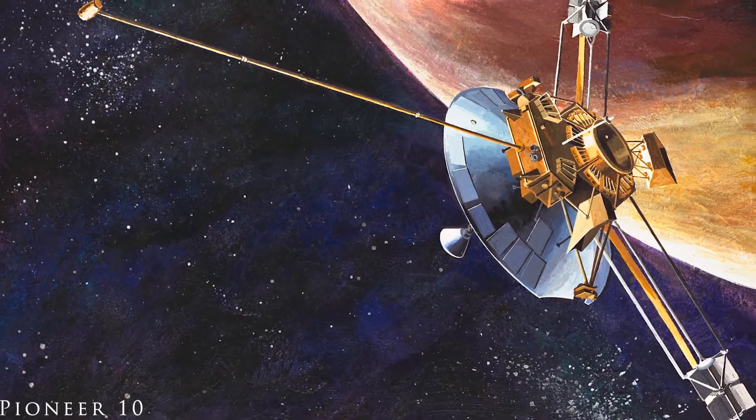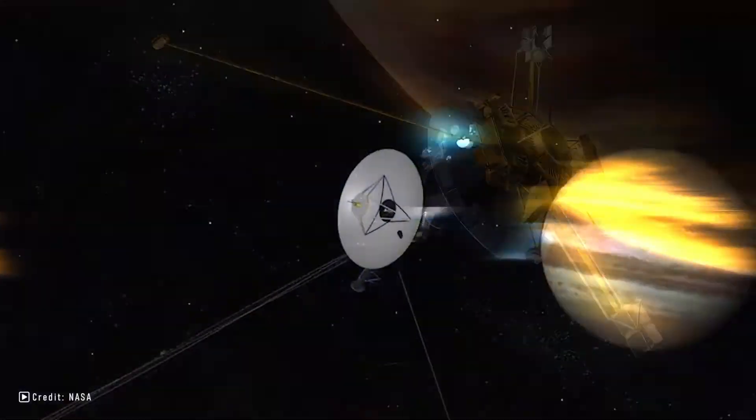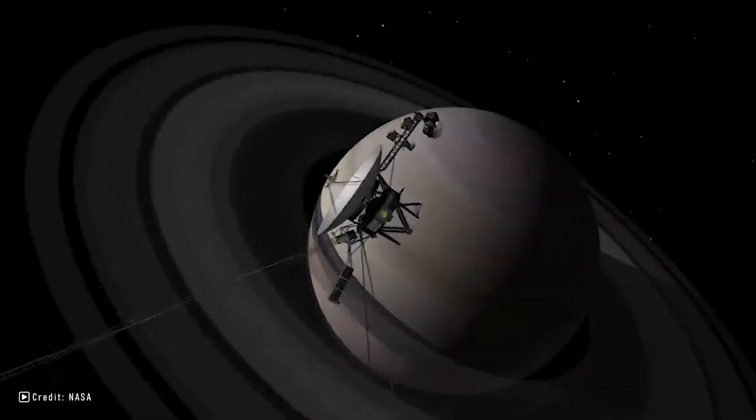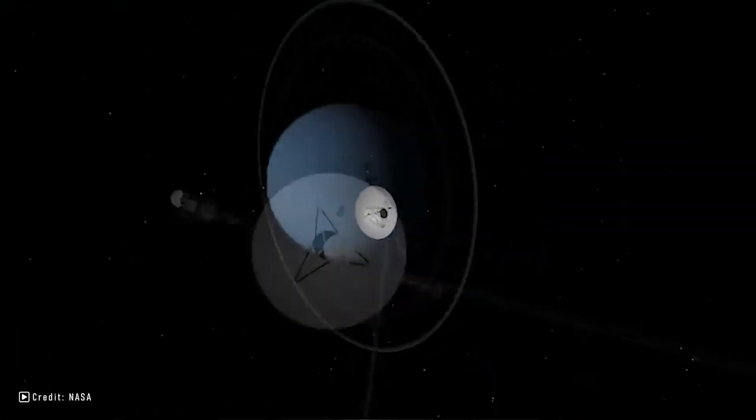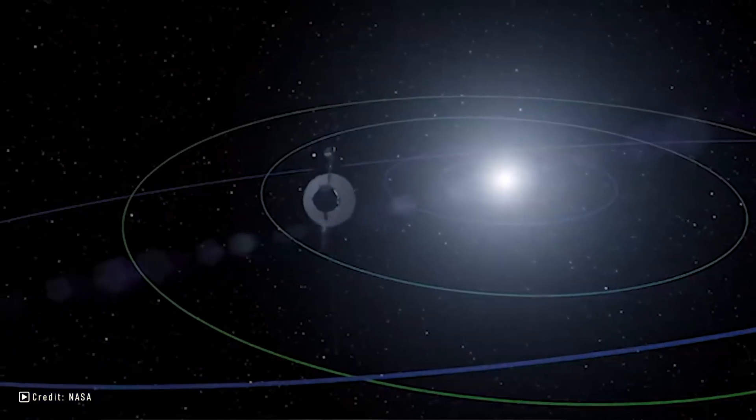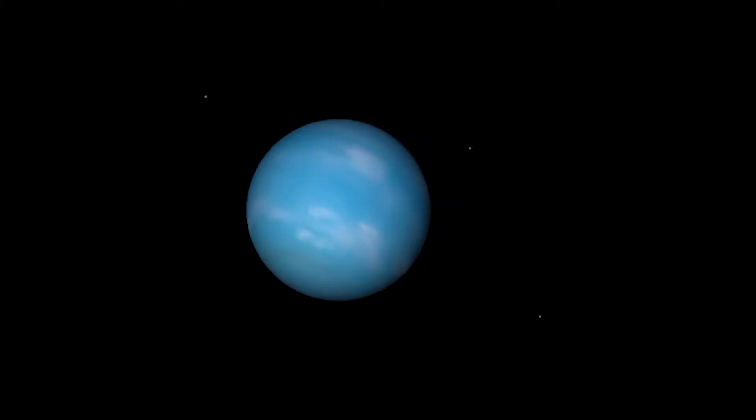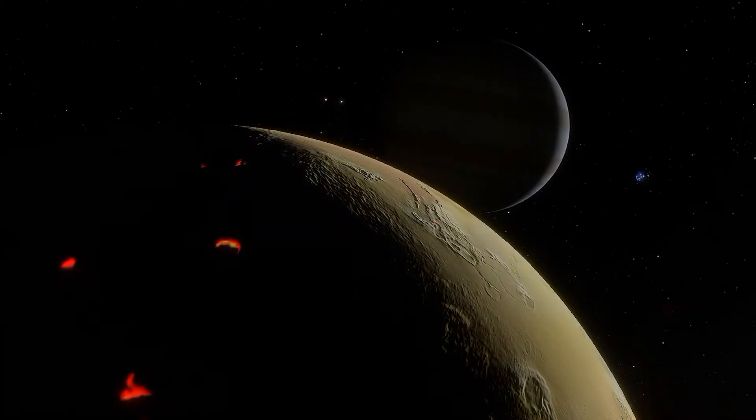As we were able to send probes to the gas giants towards the end of the 20th century, our understanding of these planets changed, with especially the Voyager missions being pivotal to this day. Voyager 2 remains the only probe to have ever visited Uranus and Neptune. And from its visits we learnt that Uranus and Neptune are internally very differently composed than Jupiter and Saturn.